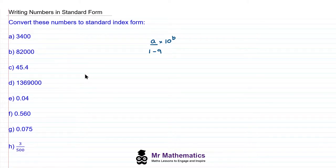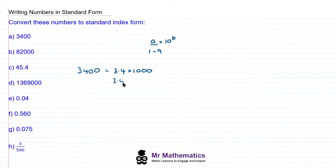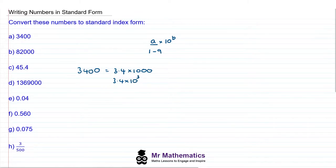We'll start with question A, where we have 3,400. To write this in standard form, we write 3.4, where 3.4 is between 1 and 9, and now we need to multiply this by 1,000, because 3.4 times 1,000 makes 3,400. We need to write this 1,000 as a power of 10 — we can count the zeros: 1, 2, 3 — so this is 10 to the power of 3.